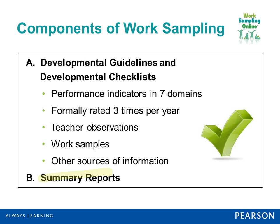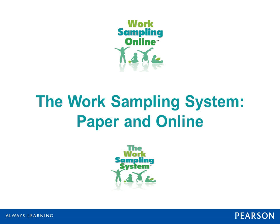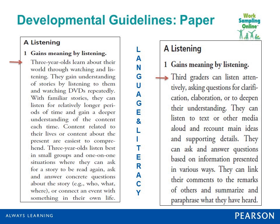When you think about the Work Sampling System, you think about developmental guidelines, developmental checklists, and summary reports. The information used to complete the checklist and summary reports will be based on evidence collected during observation of the child in his or her natural environment. The Work Sampling System is available in both paper form and online, and the online version is our focus today.